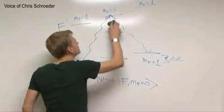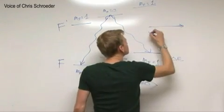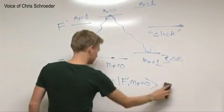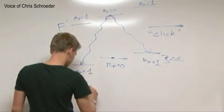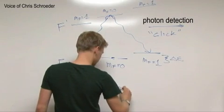Conservation of angular momentum allows certain decay pathways, and the ones that we care about are those to the MF equals plus minus one states. Using polarization measurements on the emitted photon, we can filter out events in which the electron decayed to the MF equals plus or minus one states.